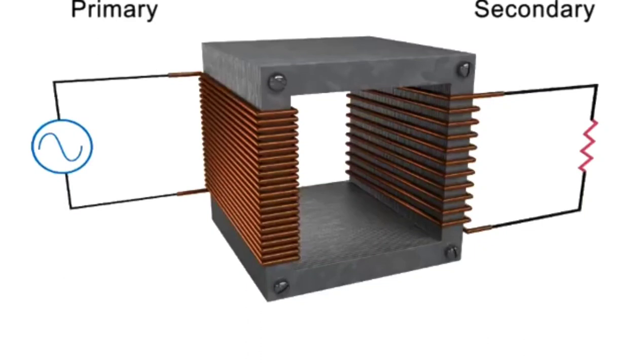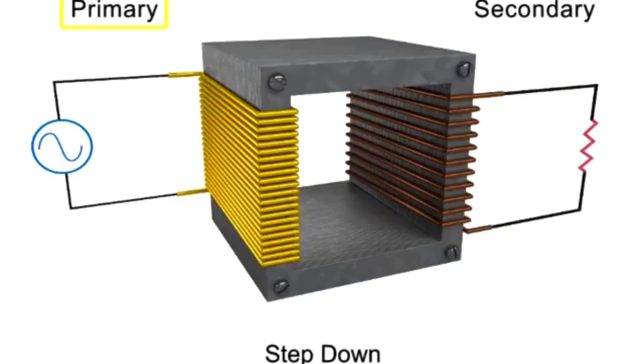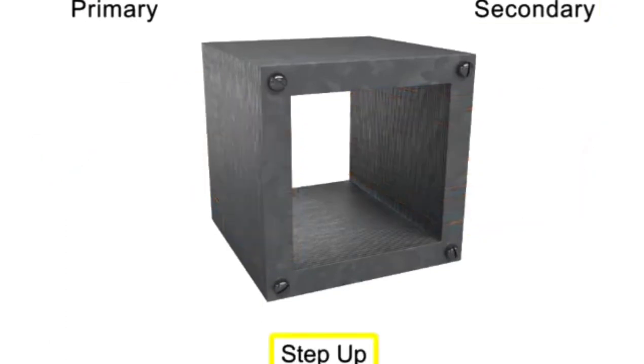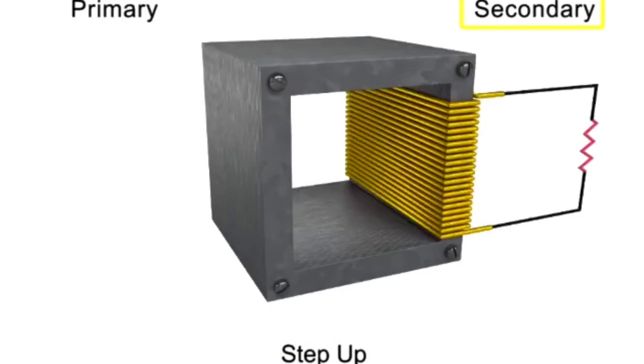Transformers can either step up or step down a voltage. In a step down transformer, the number of turns in the primary coil is greater than the number of turns in the secondary coil. In a step up transformer, the number of turns in the secondary coil is greater than the number of turns in the primary coil.